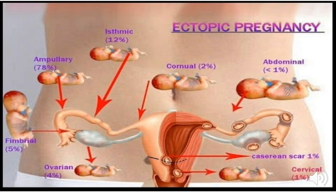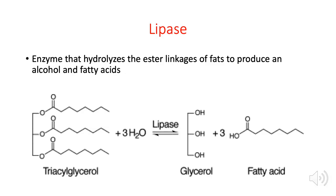If a patient presents with upper abdominal pain and also has mumps, the high serum amylase cannot tell you whether the patient is having bile duct obstruction or acute pancreatitis. That is why we need an enzyme more specific to the pancreas than amylase — and that enzyme is lipase, which is also drained into the pancreatic duct toward the duodenum but helps digest triglycerides.